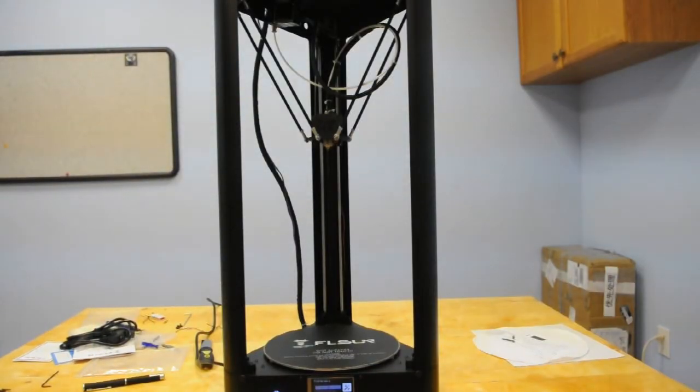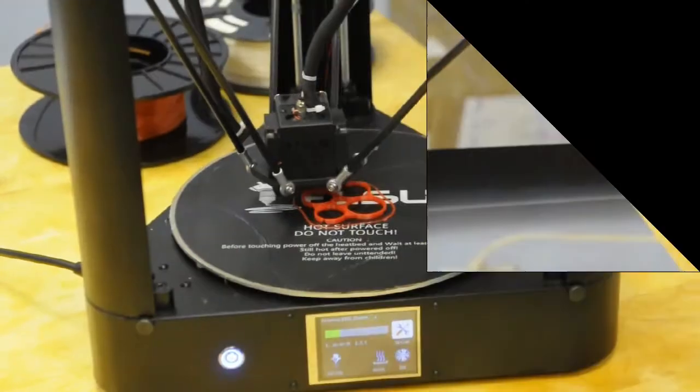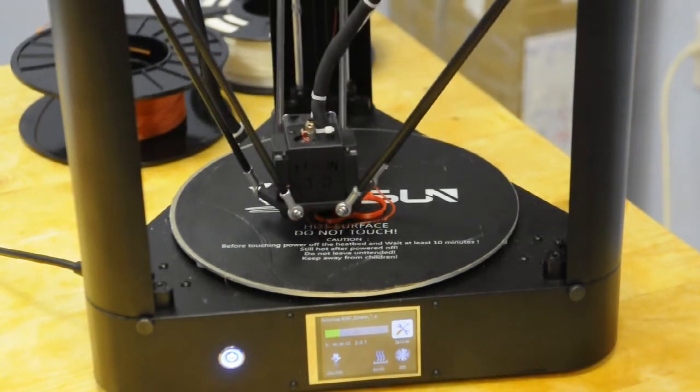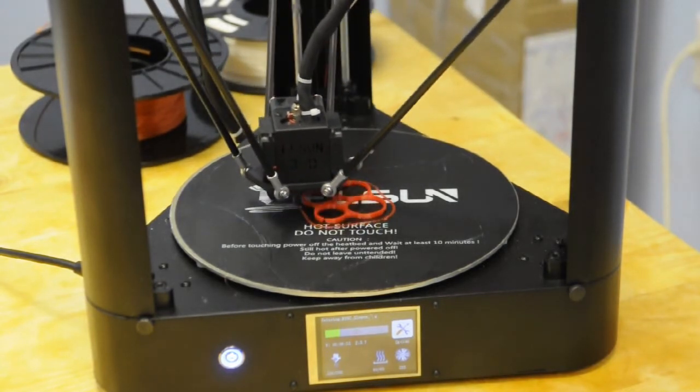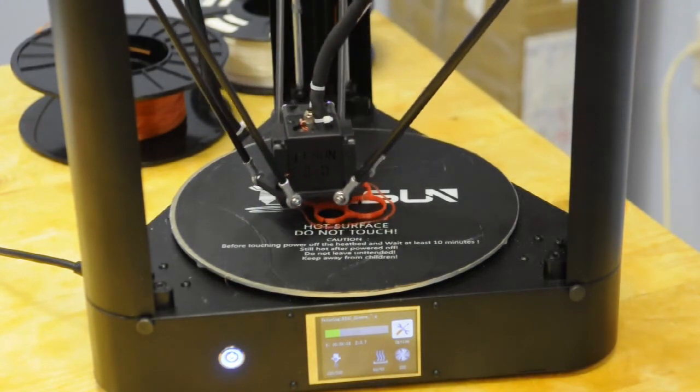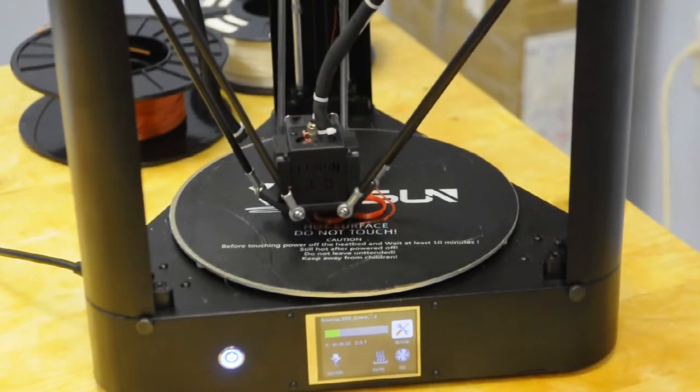The Folsun QQ is a Delta style all metal printer that comes almost fully assembled. It takes approximately 20 minutes to finish the assembly. It has an overall size of 290 by 350 by 800 millimeters with a print volume of 260 millimeters in diameter by 370 millimeters in height. It's claimed to reach printing speeds of up to 150 millimeters per second. It has a single extruder, automatic bed leveling, and a full color touch screen controller.